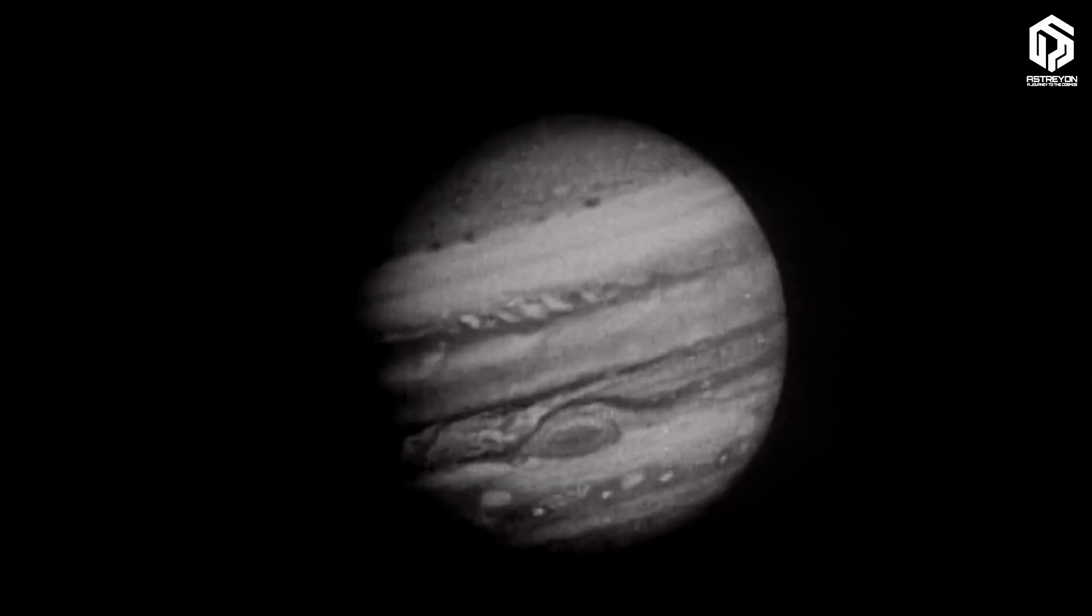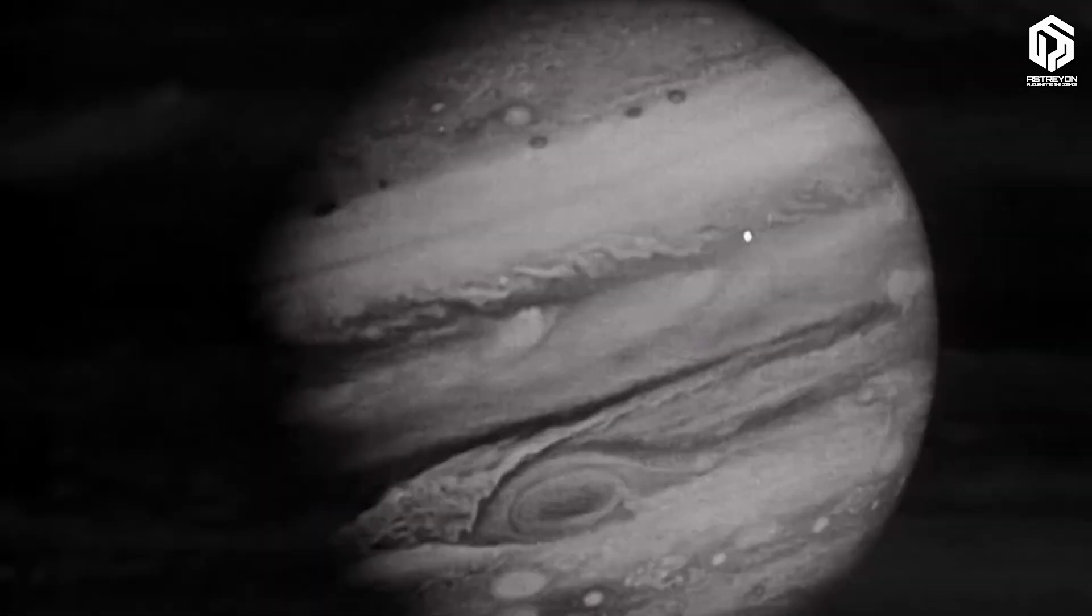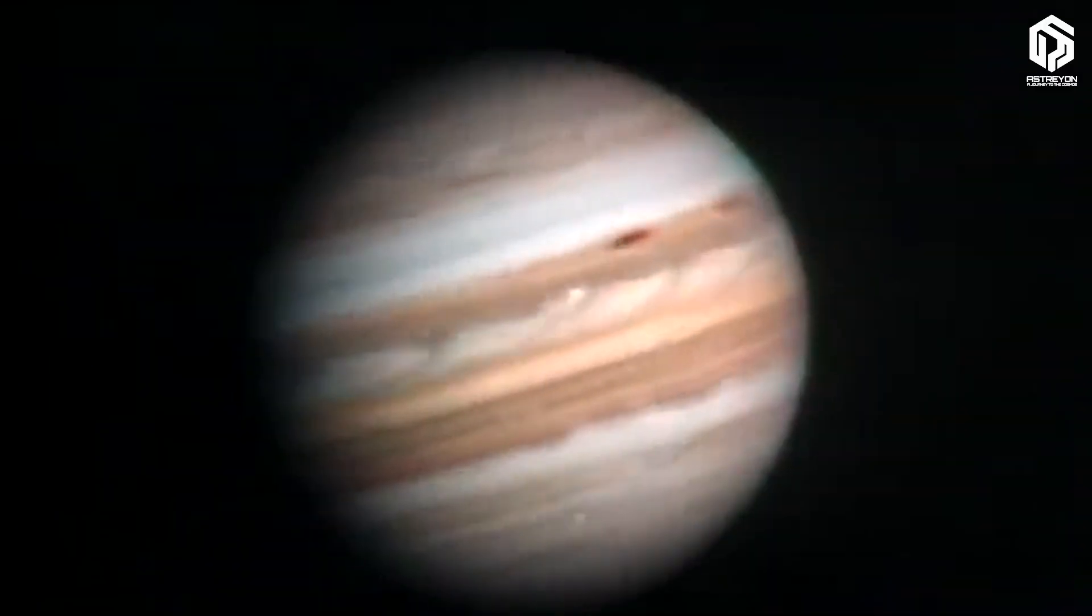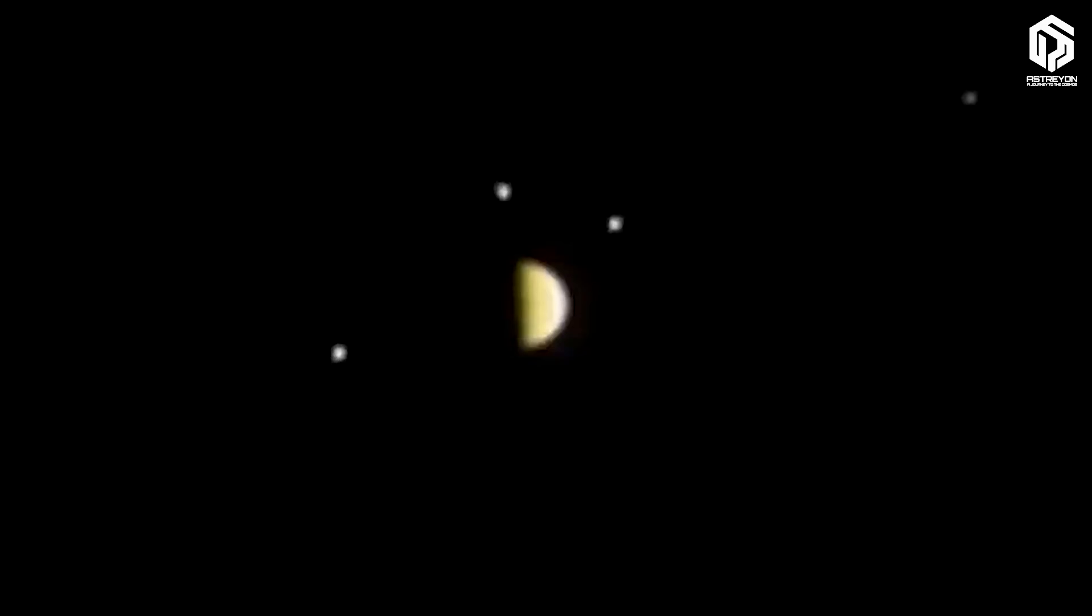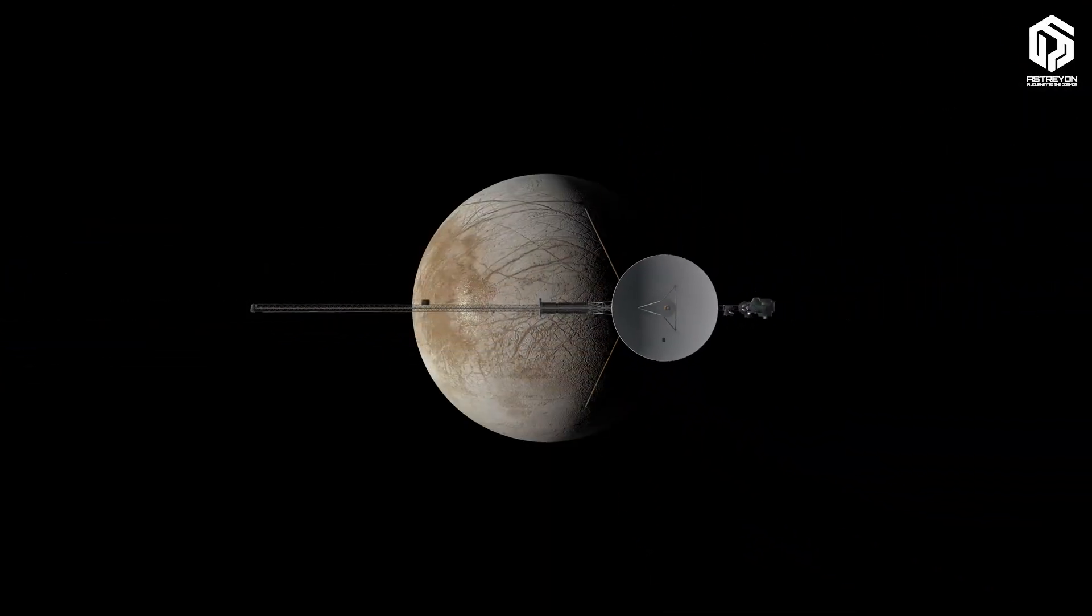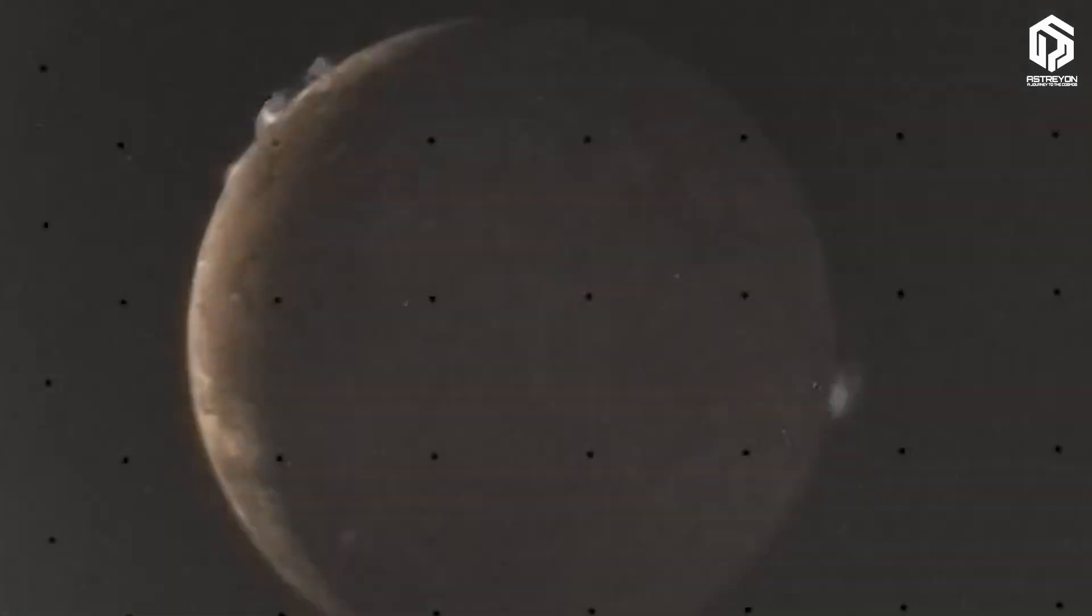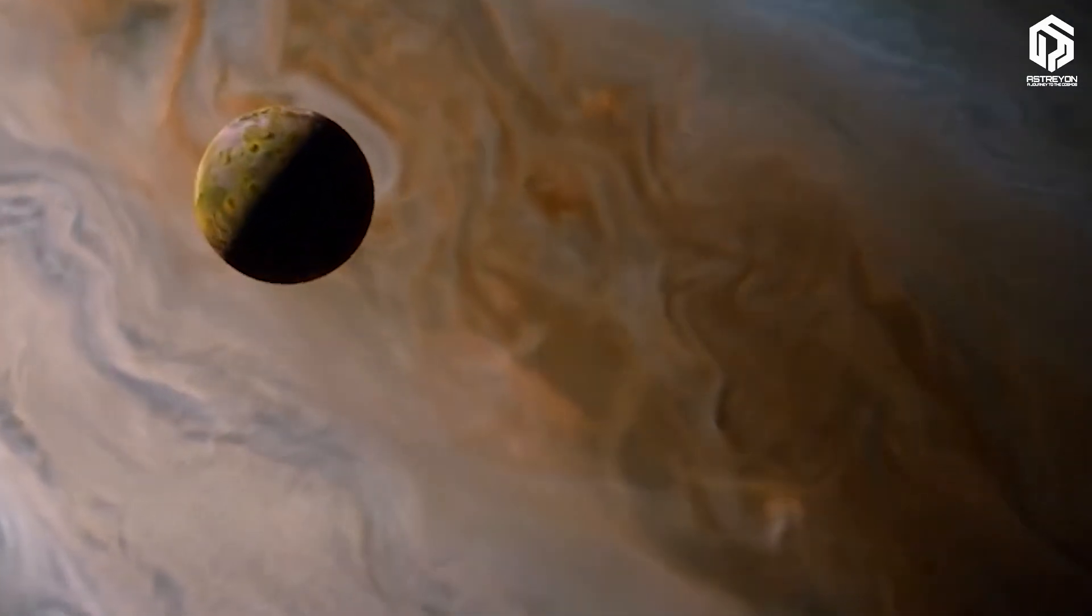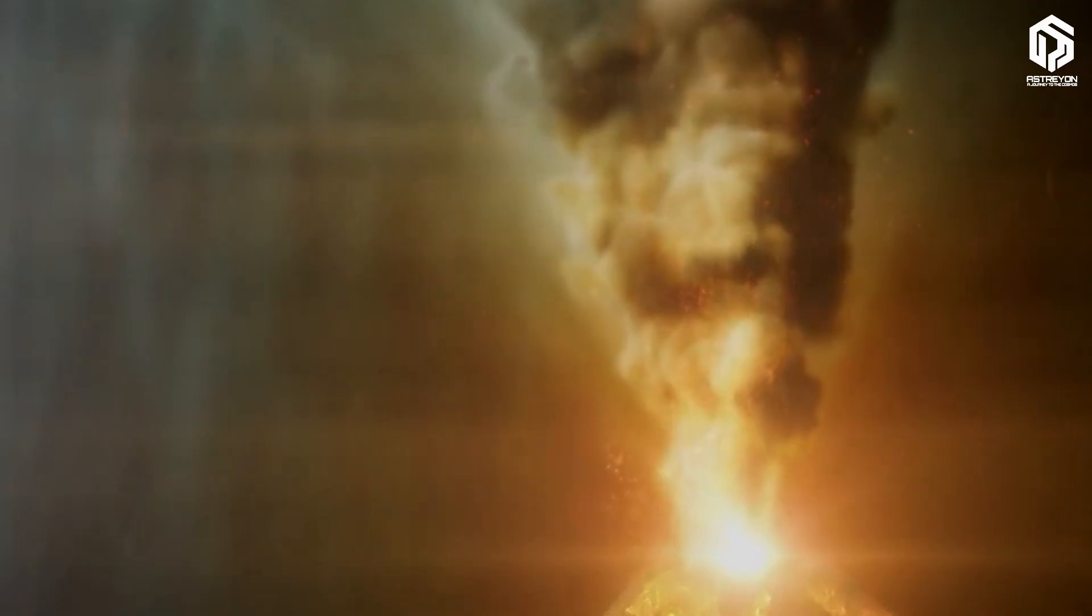Voyager 1 first headed toward Jupiter, the largest planet in the system. In March 1979, as it passed by this giant, it sent stunning images showing Jupiter's stormy atmosphere in detail: massive storms like the Great Red Spot and thin rings that were previously unknown. But the real excitement was in Jupiter's moons. For example, the moon Io, where Voyager discovered the most active volcanoes in the solar system, eruptions that hurl molten sulfur hundreds of kilometers into space, all from a distance where signals took over an hour to reach Earth.